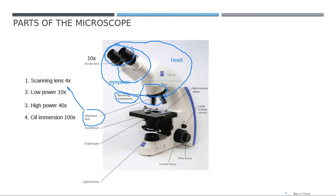The whole part over here is called the arm of the microscope. The base of the microscope is called the base, or sometimes it is called the body of the microscope.